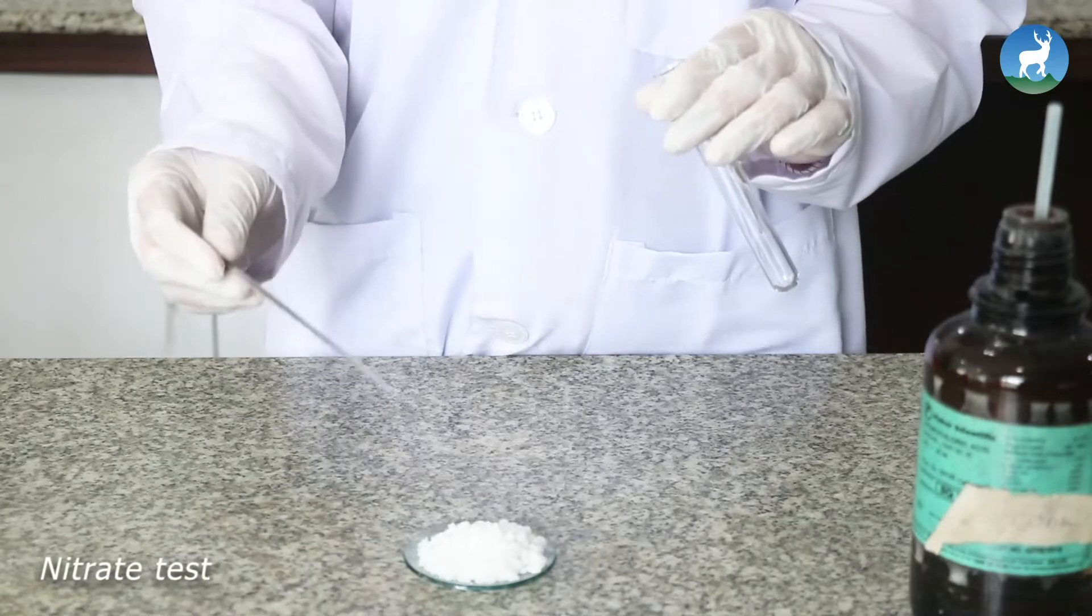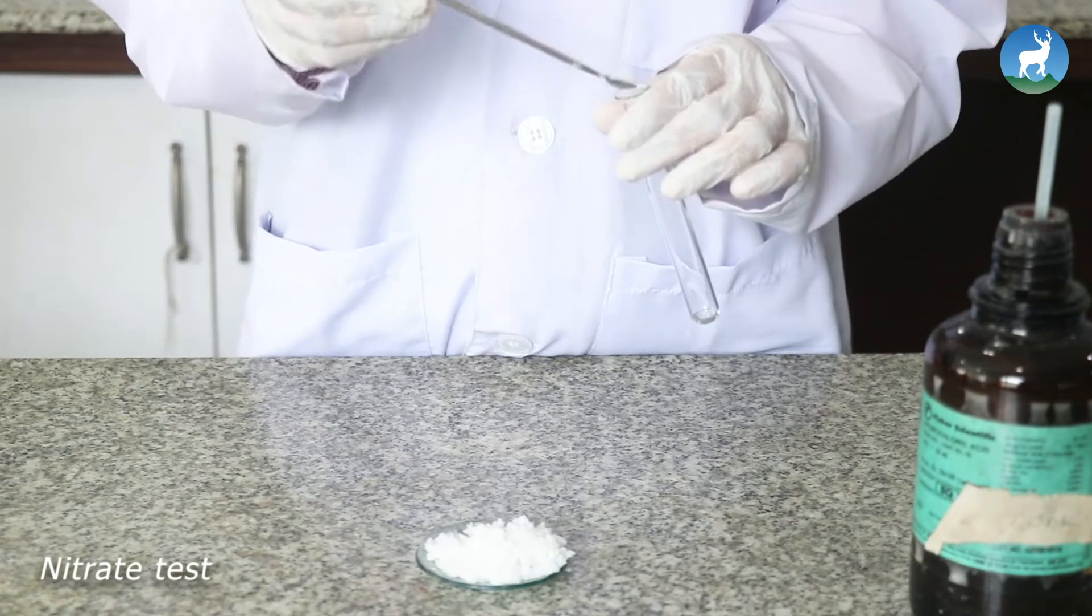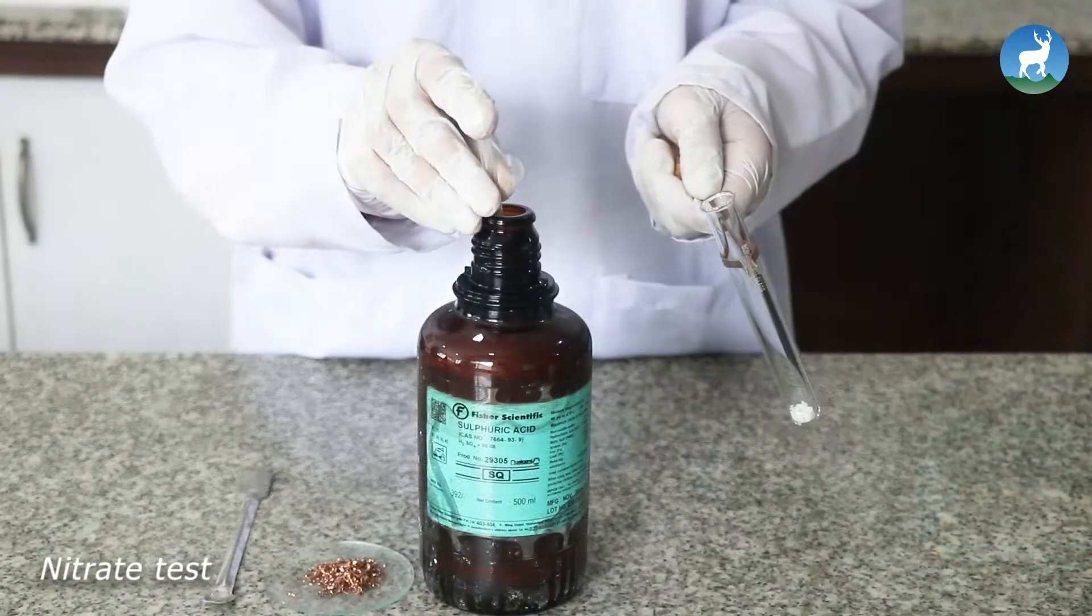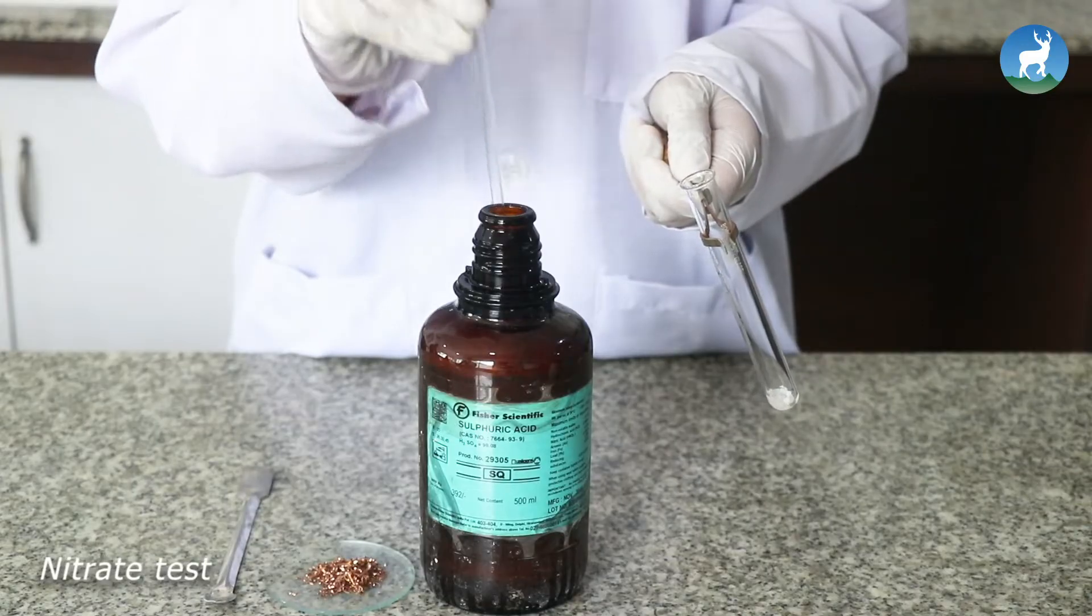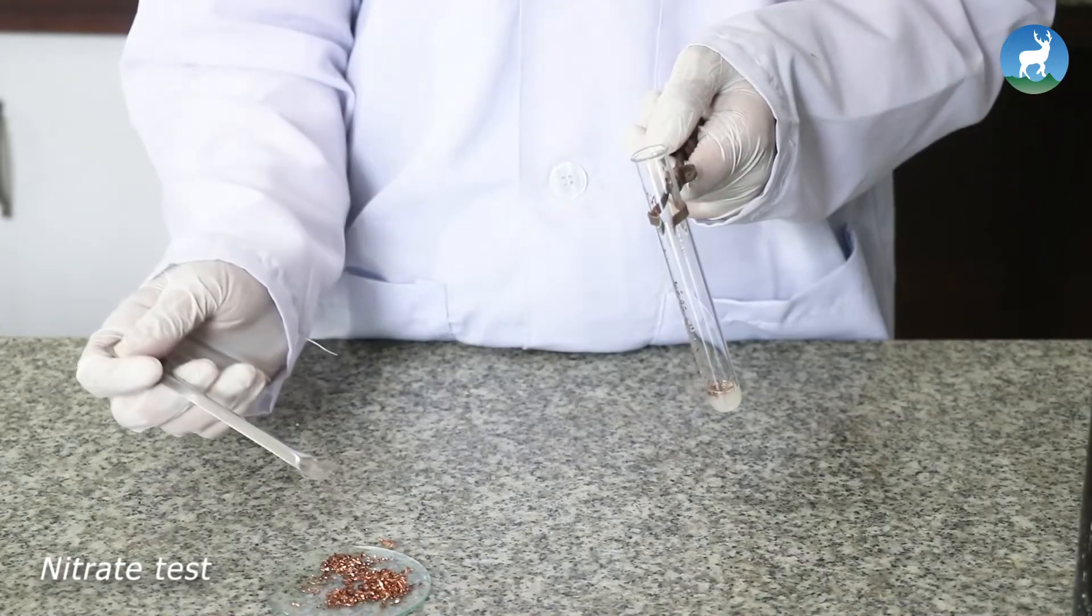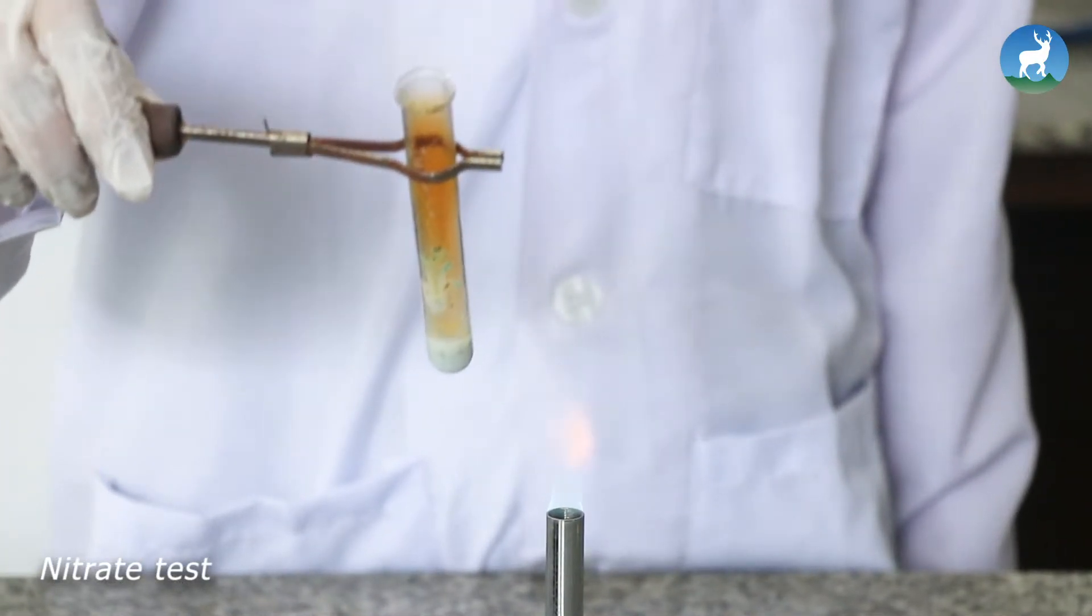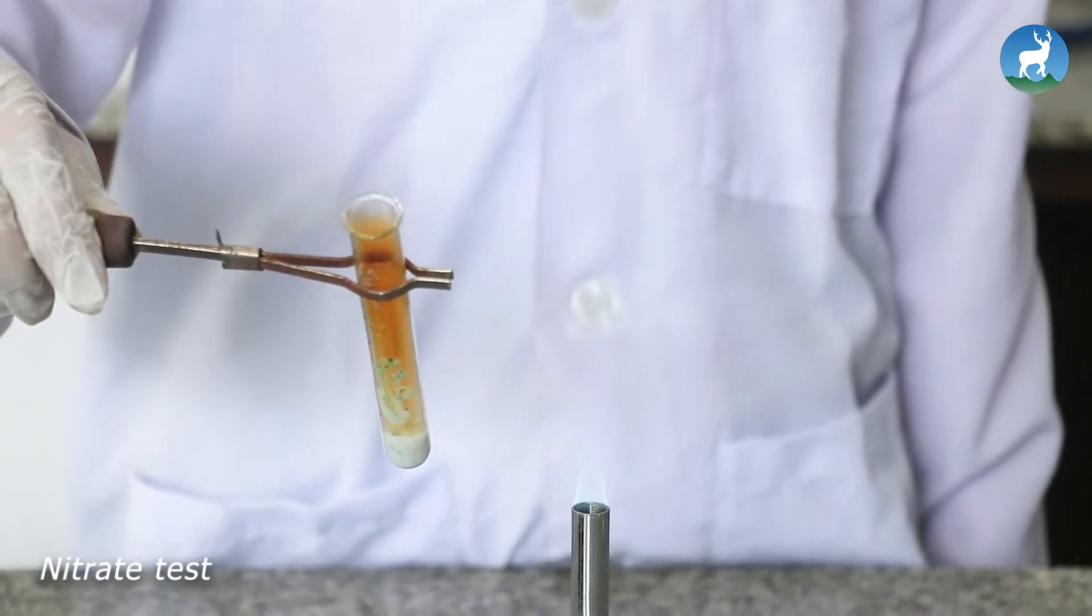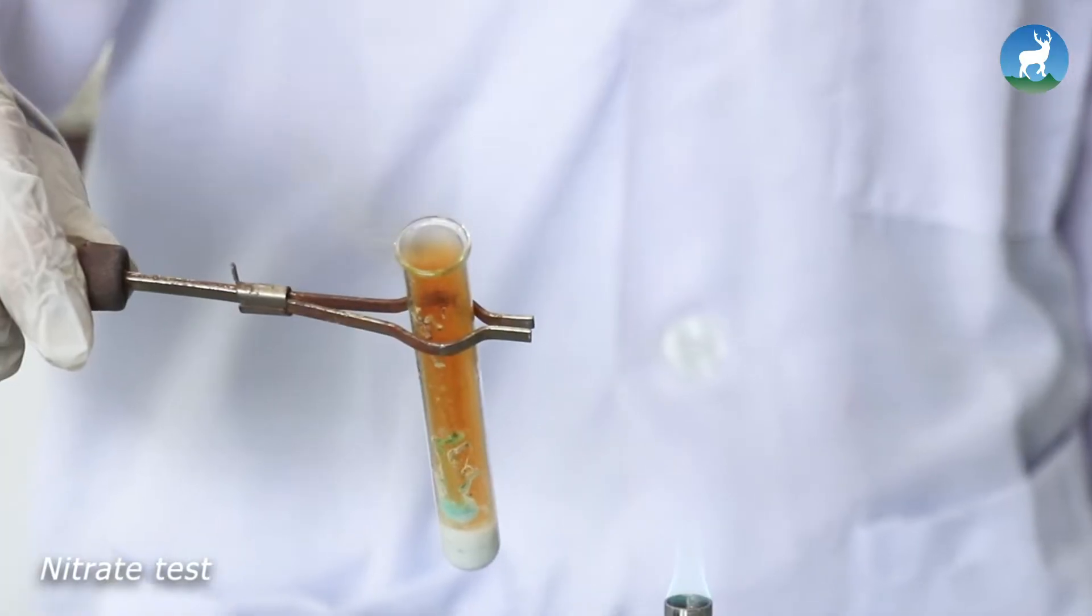Nitrate test: Take a pinch of salt in a clean and dry test tube. Add few drops of concentrated sulfuric acid and few pieces of copper turning. Warm but never boil. Brown fumes evolved. It indicates the presence of nitrate ion in the given sample.